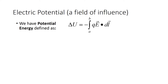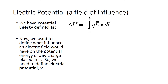We want to define what influence an electric field would have on any charge placed in it — what does the field do to whatever charge? We need to define a field of influence for a given electric field or charged object, and for that we define electric potential. Just as in chapters 22 and 23 we started with electric force and derived the electric field, here we start with electric potential energy and derive electric potential, which describes the field of influence of a charged object.